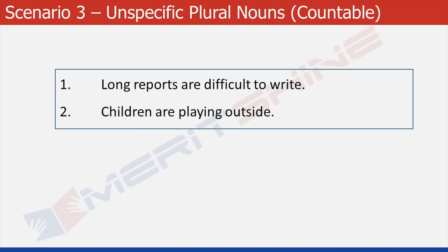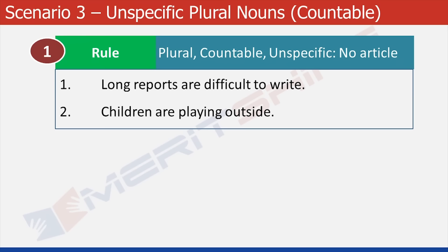I would like to caution you that these nouns can become specific provided they have a context. For example, a husband comes back home and asks his wife where Guddu and Guddi are. The wife replies 'The children are playing outside.' Here the children are Guddu and Guddi, which makes 'children' specific — it takes the article 'the'. So before you decide that a plural or uncountable noun will not take any article, please ensure that the context does not make them specific.